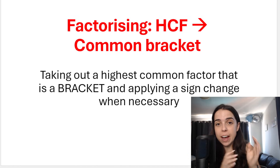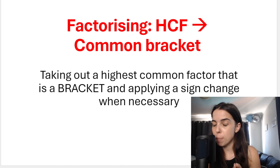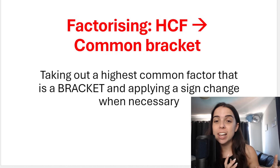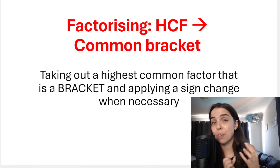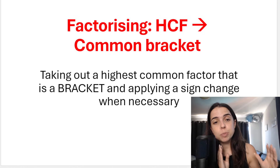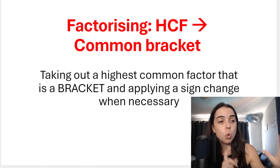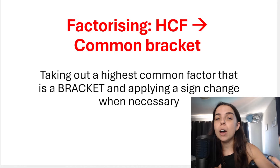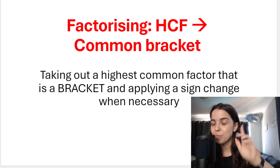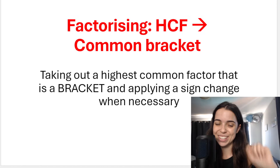In this video, we take a look at factorizing algebraic expressions using a special type of highest common factor, which I like to call common bracket. It's basically when we look at an expression and we need to factorize it, and we see that the terms — maybe two terms, maybe three terms — what they have in common is a bracket: an identical bracket that we take out as our highest common factor. Sometimes we need to apply a sign change, so we'll be doing all of that in this video.